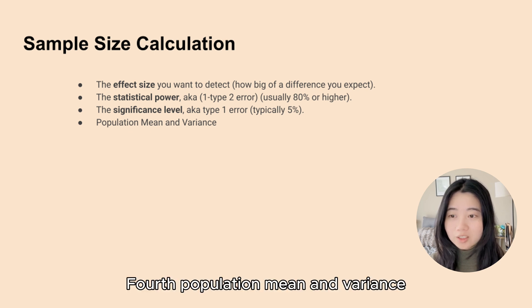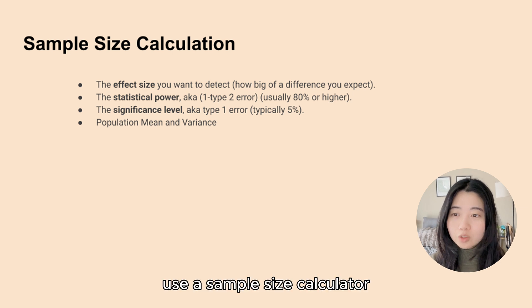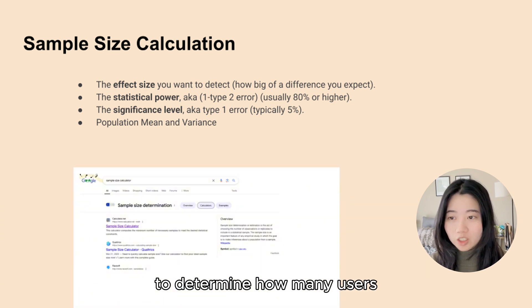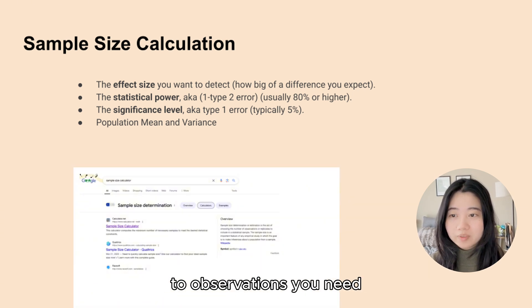Fourth is the population mean and variance. Use a sample size calculator to determine how many users or observations you need.